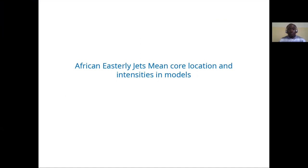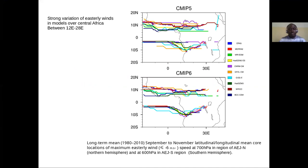As the first step in this study, we examine the mean core location and intensity of the African East Allegiance in models. This figure represents the long-term mean September to November latitude-longitude location of maximum easterly wind. Note that Africa East Allegiance are easterly winds with wind speed exceeding six meters per second.